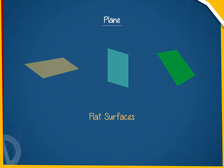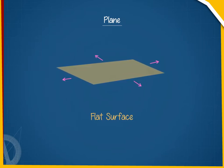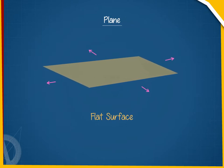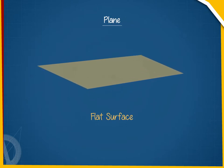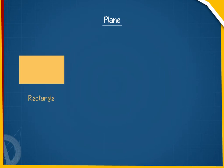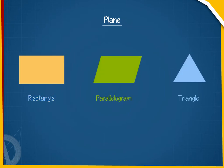A plane is a flat surface which extends endlessly in all directions. We represent a plane in the form of different two-dimensional surfaces like a rectangle, a parallelogram, or a triangle.